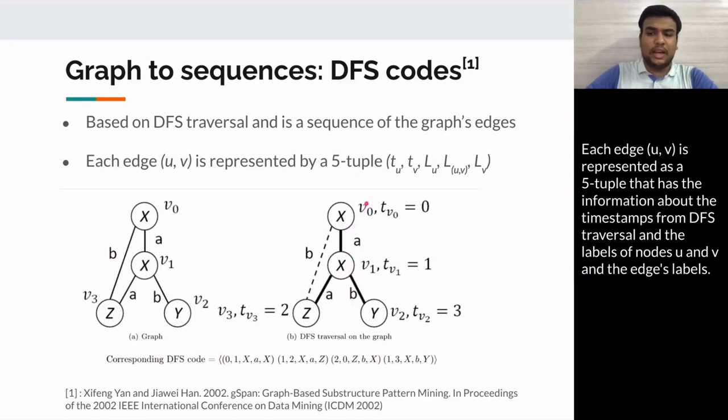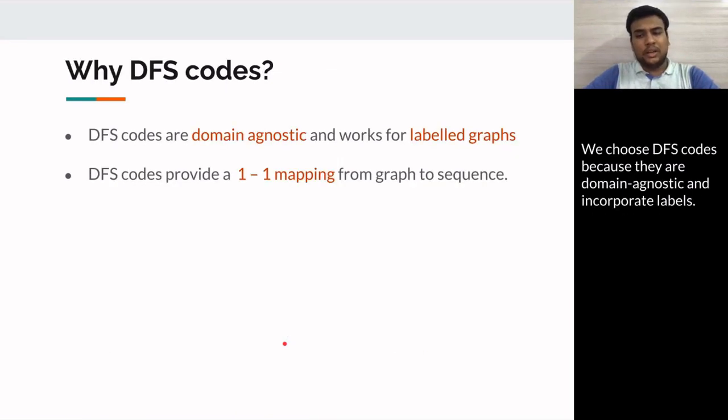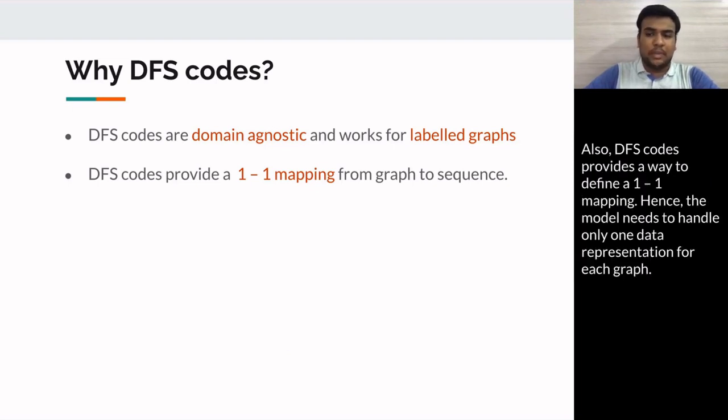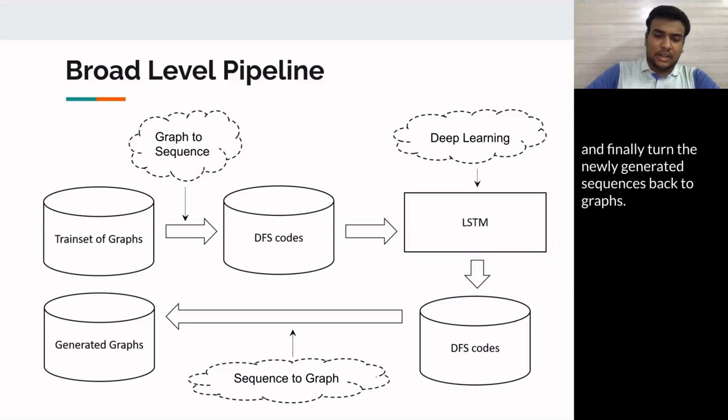Each edge (u, v) is represented as a 5-tuple that has information about the timestamps from the DFS traversal and the labels of nodes u and v and the edge label. Here figure A shows the graph and figure B shows the DFS traversal that gives the corresponding DFS code. We choose DFS code because they are domain agnostic and incorporate labels. Also, DFS codes provide a way to define one-to-one mapping, hence the model needs to handle only one data representation for each graph. We use the well-known deep learning model LSTM to train a generative model for DFS codes and finally turn the generated sequences back to graphs.